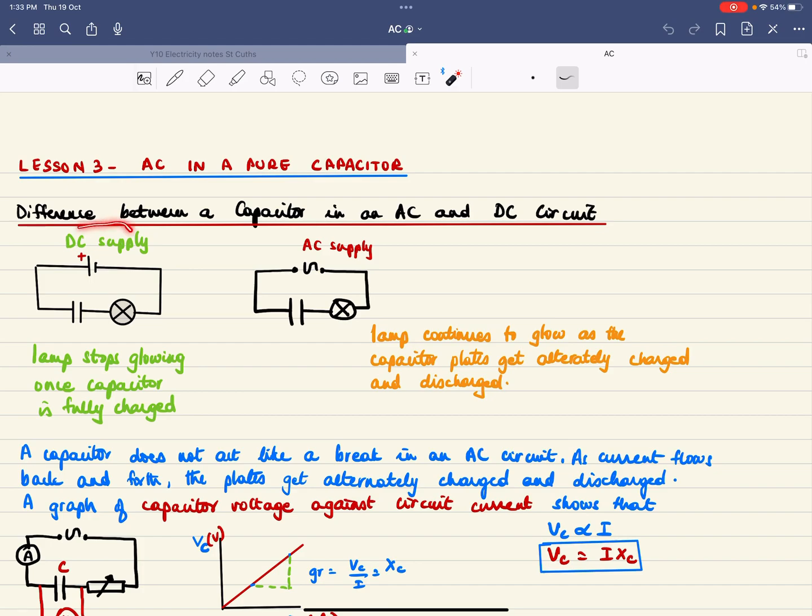If you have a capacitor in a DC circuit with a lamp, the lamp will stop glowing once the capacitor is fully charged.